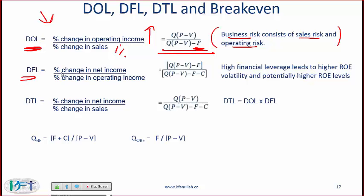Degree of financial leverage is the percentage change in net income over percentage change in operating income, and the finance costs also come into play. To remember this formula, note that it is very similar to the DOL formula. The difference is that F, which stands for fixed operating costs, now also shows up in the numerator, and in the denominator you now add the interest costs — C stands for finance or interest costs.